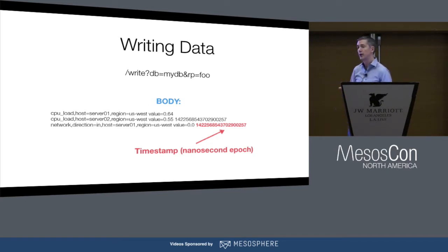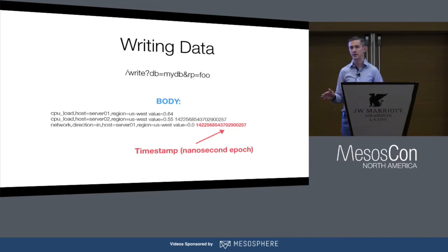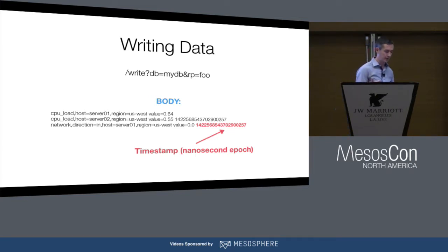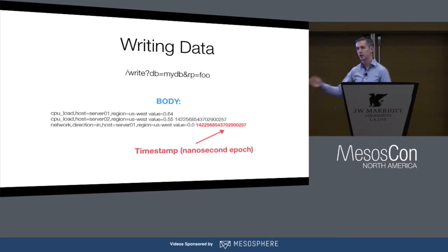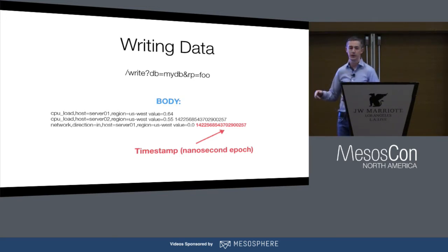Surprisingly, we have people who use nanosecond-scale timestamps. We've largely seen this in quantum computing use cases, and also for some high-frequency trading firms that track their network gear at that level of granularity because they have atomic clocks that make sure everything's in sync globally.